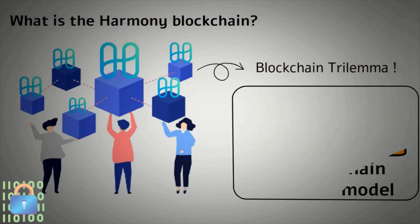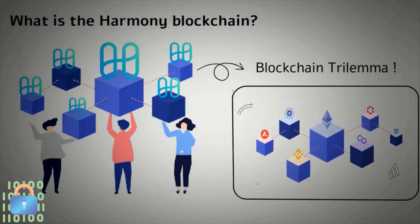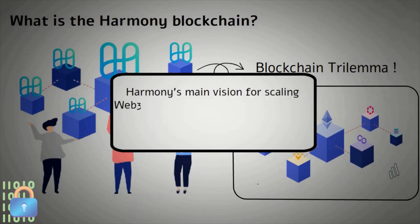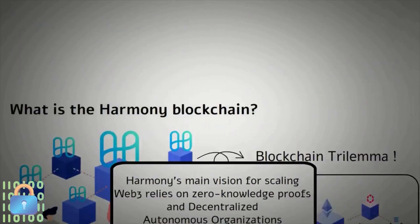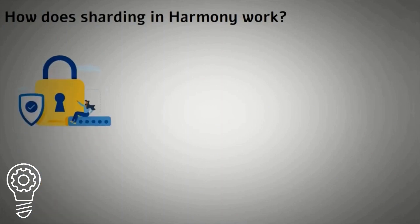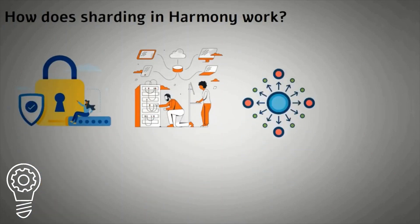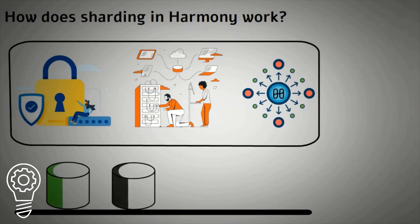The blockchain offers bridging services between BNB Smart Chain, Ethereum, Bitcoin, and other networks. Harmony's main vision for scaling Web3 relies on zero-knowledge proofs and decentralized autonomous organizations, DAOs. One of Harmony's keys to providing security, scalability, and decentralization is sharding. The Harmony sharding splits the network into four sections that work in parallel.